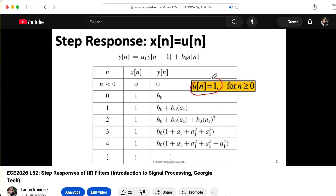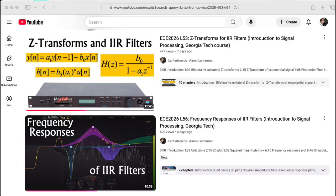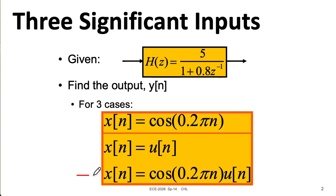We'll then compute what the output is if the input is a unit step function. We've done this sort of thing before, but we took a fairly brute force approach of working through the recursion. In this lecture, we'll compute the output using Z-transforms. This is generally easier for most problems. Finally, we will use Z-transforms to compute the output for this instant-on cosine and see how the result relates to the first two cases.